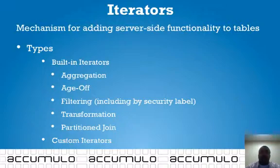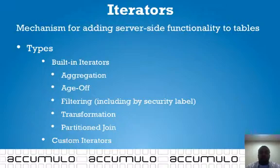Built-in iterators are those included as part of the Accumulo loadout or the Accumulo API. They include aggregation iterators, age-off iterators, filtering, transformation, and partition join iterators.